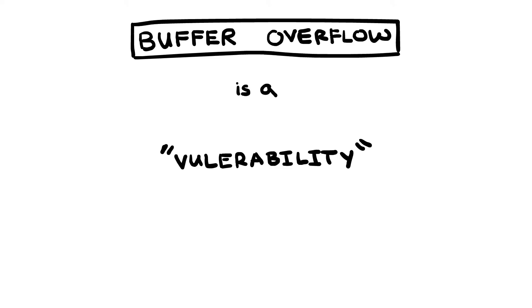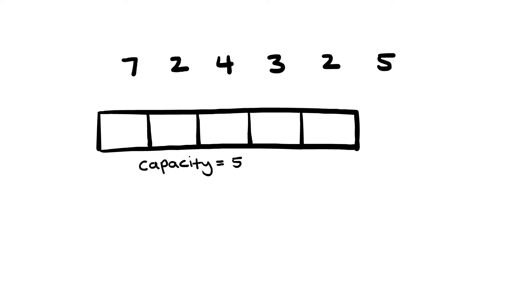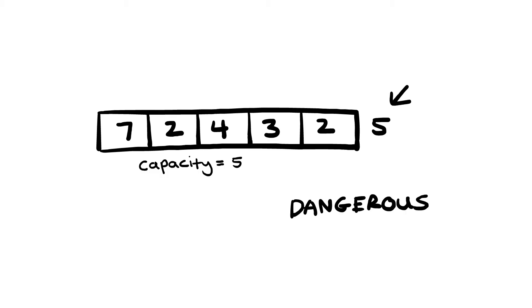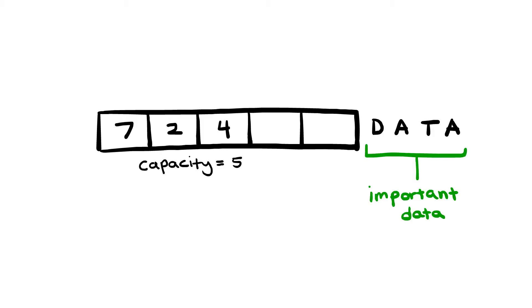A buffer overflow is a security vulnerability that occurs when you write more data to an array than its capacity, causing data to be written outside the array. The reason these overflows are so dangerous is that this overflow data actually often corrupts other very important data.